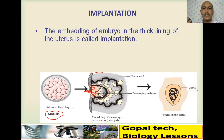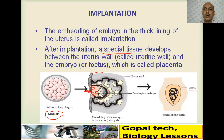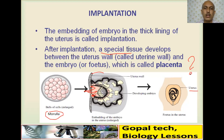Implantation is the embedding of the embryo in the thick lining of the uterus (endometrium). After implantation, a special disc-like tissue develops between the uterine wall and the embryo — this is called the placenta. Placenta is the special tissue or disc-like structure produced between the uterine wall and the embryo wall.